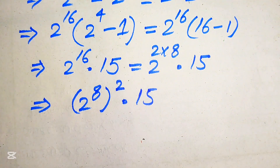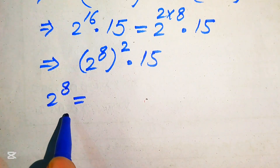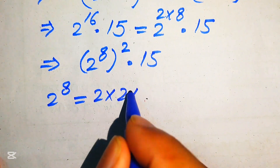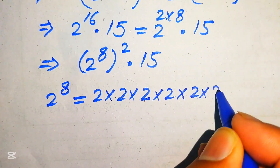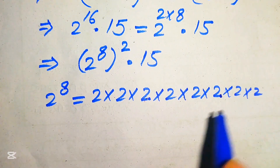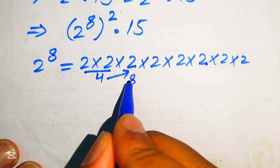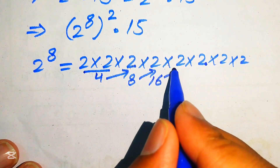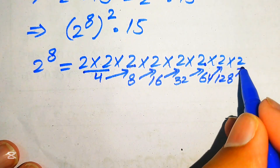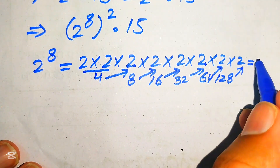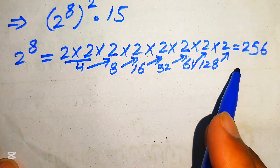To find the simplified form, we first need the value of 2 to the power of 8, which means multiplying 2 by itself 8 times: 2×2=4, 4×2=8, 8×2=16, 16×2=32, 32×2=64, 64×2=128, 128×2=256. So 2 to the power of 8 equals 256.